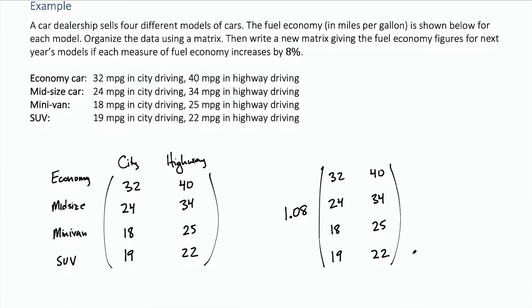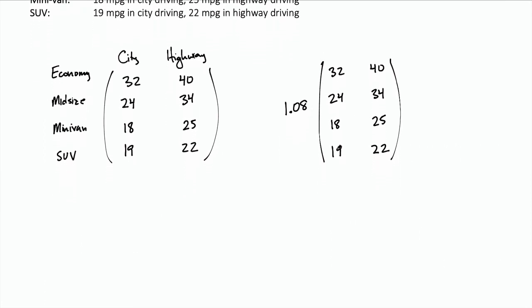Now we can go ahead and actually multiply the 1.08 by each of these numbers and that will give us our new fuel economy matrix. So this is our matrix that represents the new fuel economy for next year's models after the 8% increase.